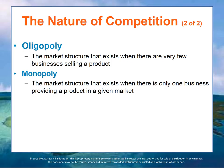An oligarchy is a market structure that exists when there are very few businesses selling a product. In an oligarchy, individual businesses have control over their product's price because each business supplies a very large portion of the products sold in the marketplace. Nonetheless, the prices charged by different firms stay fairly close together because other companies will respond to a price change to maintain their larger market share.